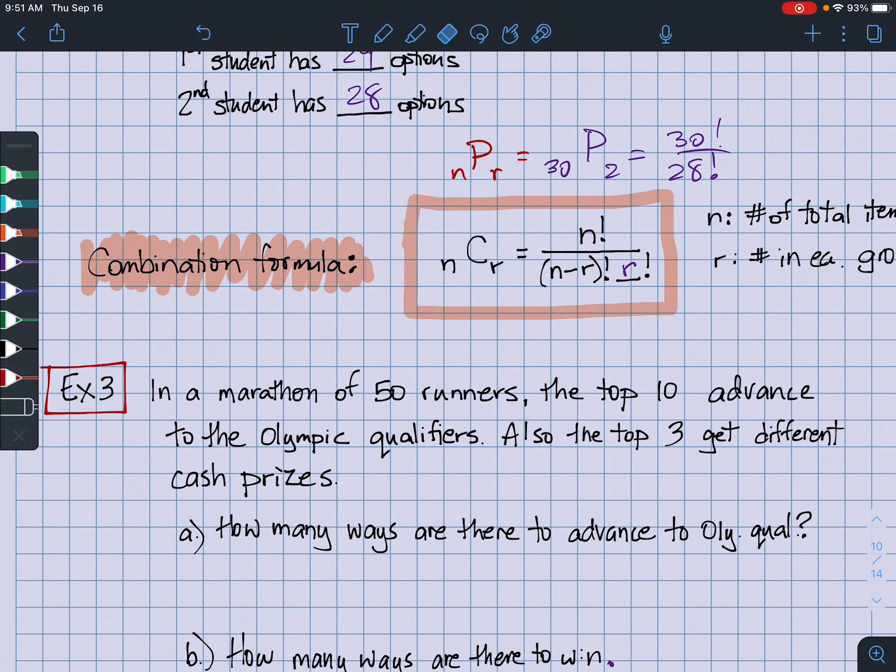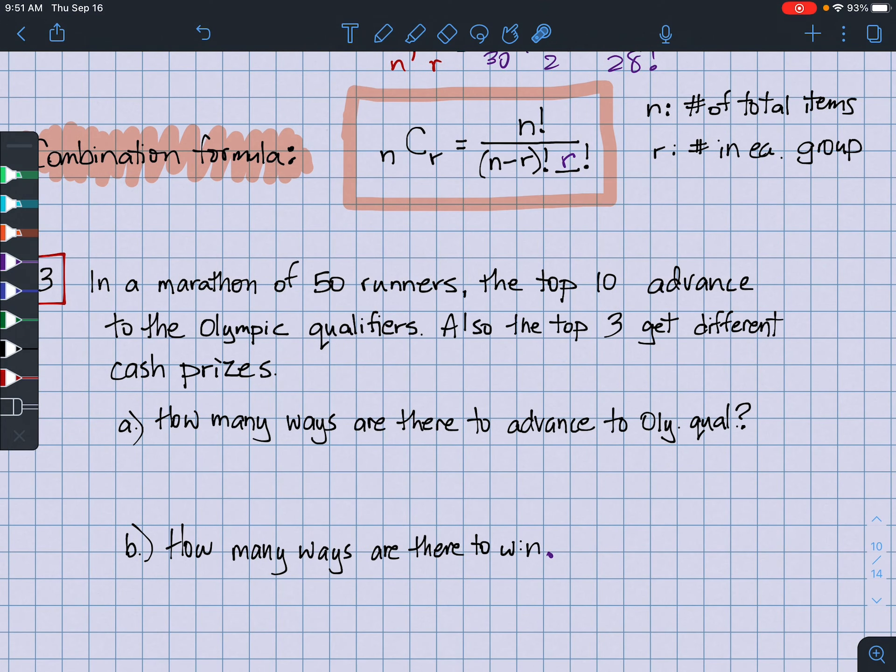Marathon, 50 runners, the top 10 advance. Okay? And also, three, the top three finishers, get different cash prizes. All right. So we've got two questions to answer. Number one, how many ways are there to qualify for the Olympics? So meaning, how many groups of 10 are there in this 50? It's going to be a huge number. And then, how many ways are there to win?